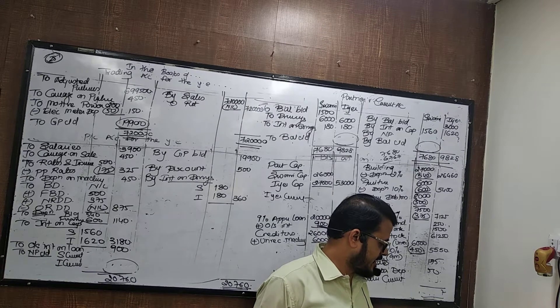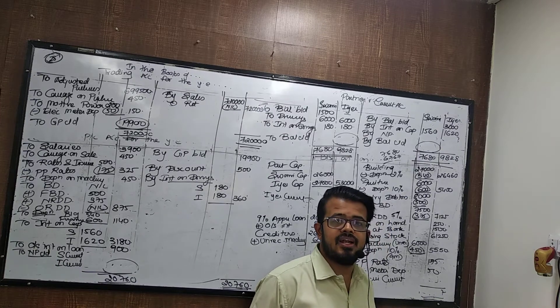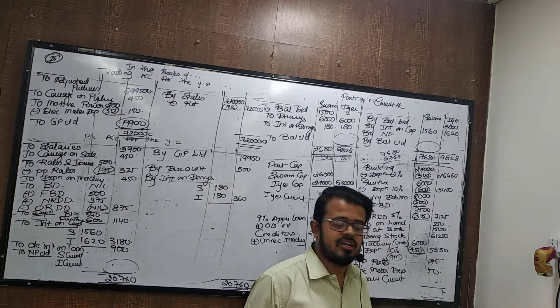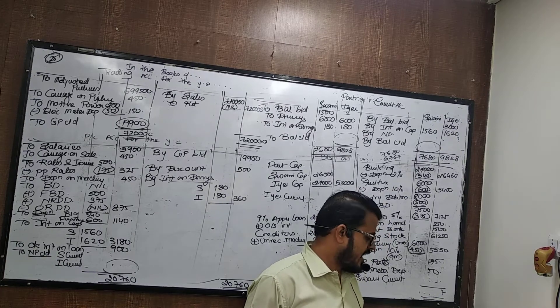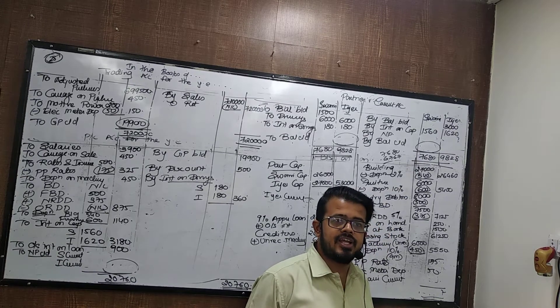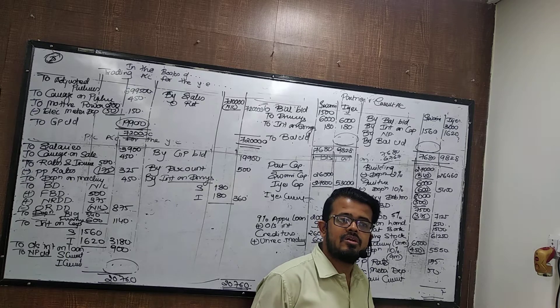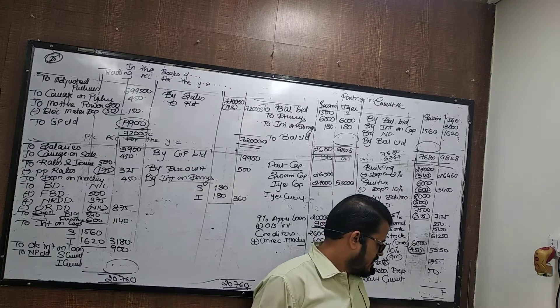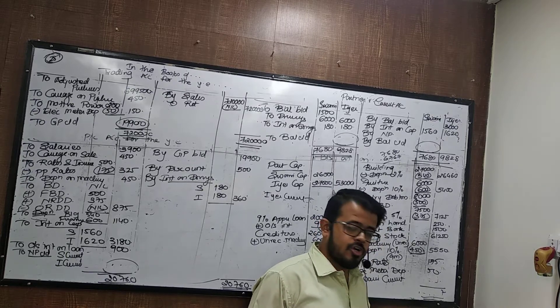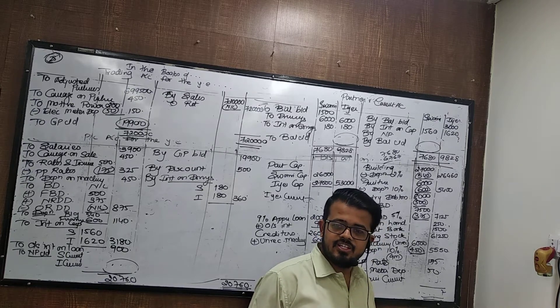Provide interest on capital. PNM debit and current credit. How many months interest on capital? 12 months. Interest on drawings? 6 months.